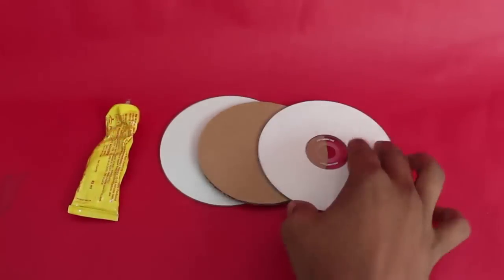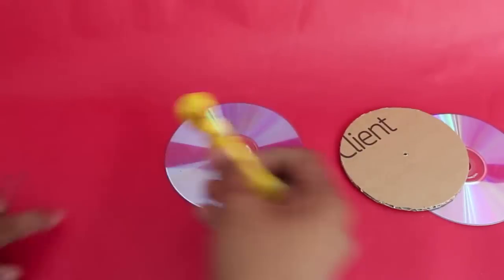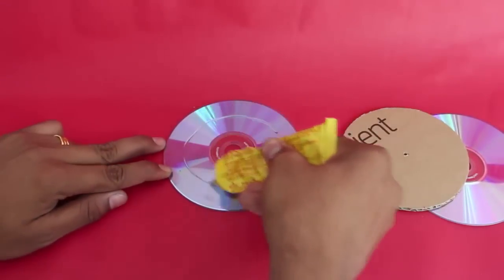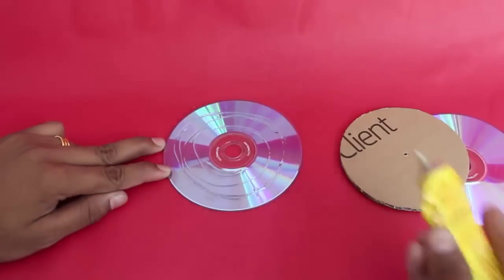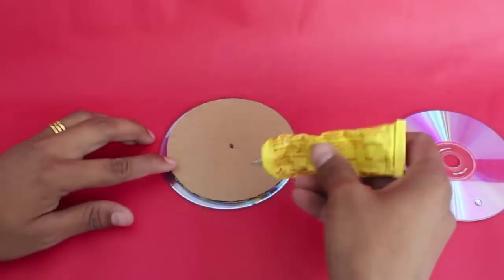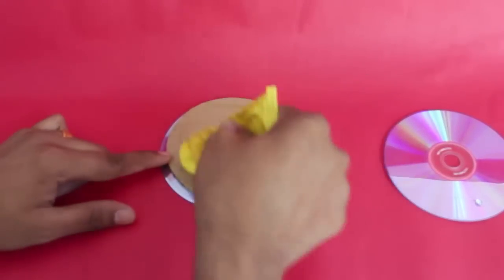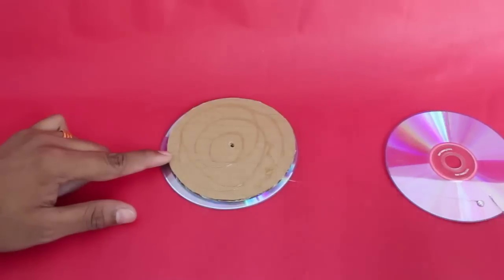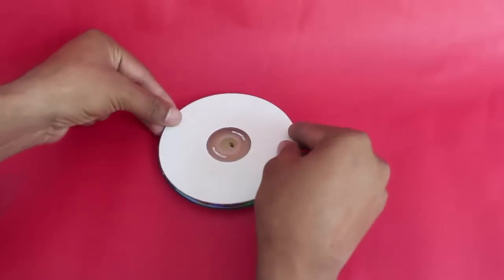To make the big pulley you will need 2 DVDs, a thick cardboard disc, and rubber glue. Apply glue on one DVD, let it dry, and then stick the smaller cardboard disc in its center. Then apply glue on the cardboard disc and stick the second DVD on top of it. This will make a big pulley with a groove.